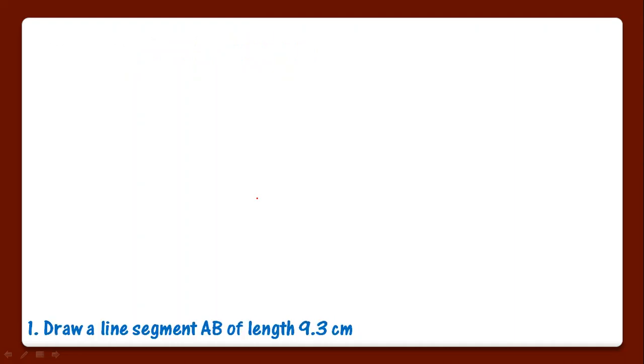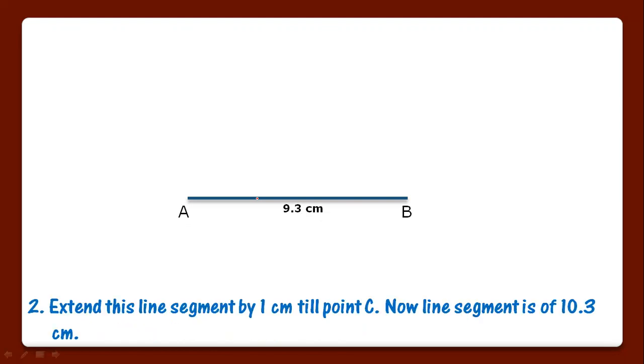Draw line segment AB of length 9.3 cm - whatever number is given under the root, you have to draw a line segment of that length. Second step is extend this line segment by 1 cm till point C. Now line segment is of 10.3 cm.